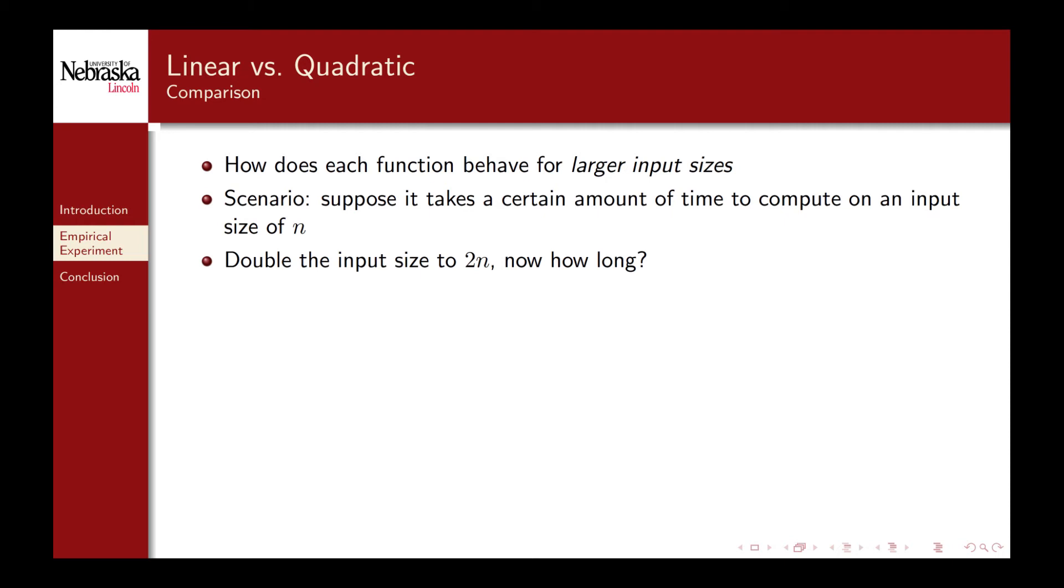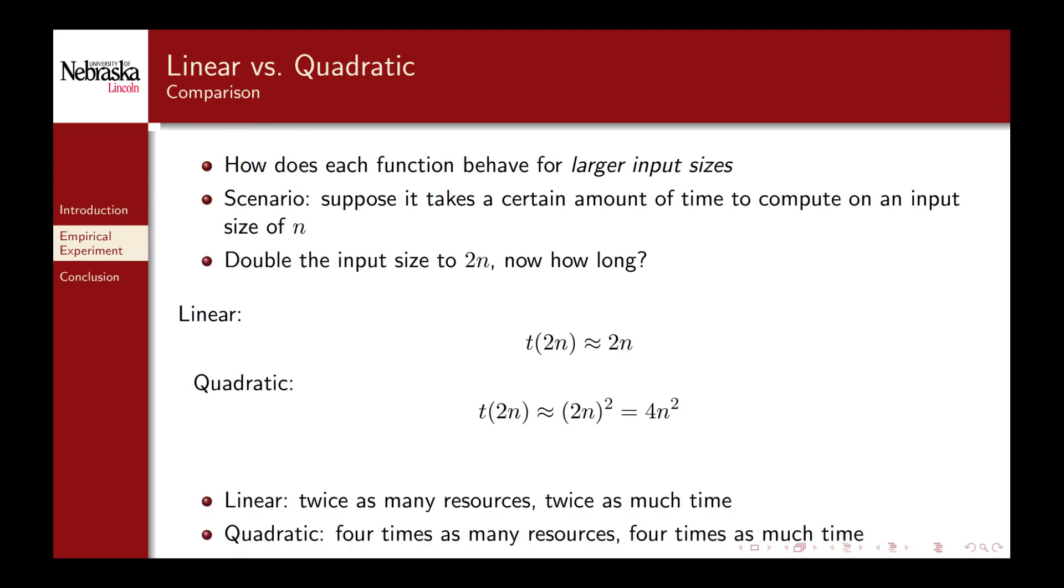How do algorithms perform as we increase the input sizes? In this case how does each one of these data structures perform as we say double the size of our list? Suppose that it takes a certain number of seconds to compute a sum on an input size of n. How long can we theoretically expect a code to take on an input size of 2n? For a linear function it would be 2n or double the amount of time. Here I'm ignoring the constants in the lower order terms just to simplify the analysis. For the quadratic function doubling the input size actually quadruples the running time because of the square factor. This means that code that performs linearly requires twice as many resources when you double the input size and quadratic code requires four times as many.